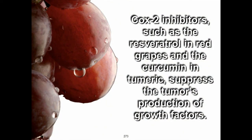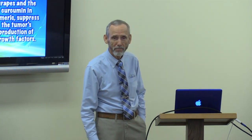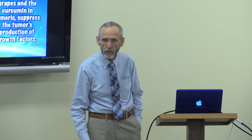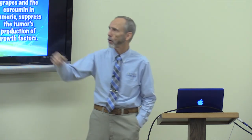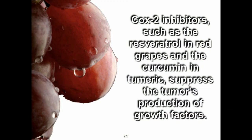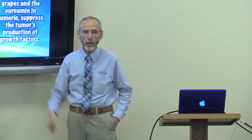Can we stop cancer at this point? We've got to stop those angiogenic growth factors. How? COX-2 inhibitors such as resveratrol found in red grapes. Science tells you to take red grapes as wine, but wine is toxic — what's healing is the resveratrol, so eat the red grapes. And curcumin in turmeric suppresses the tumor's production of growth factors. If you know somebody with cancer, get them on red grapes and curcuma.